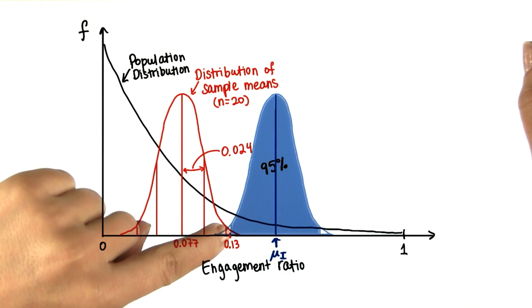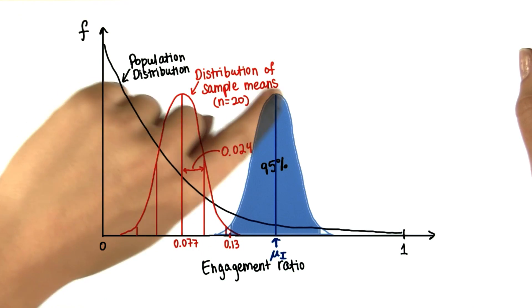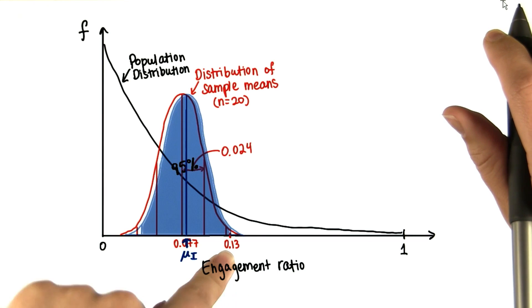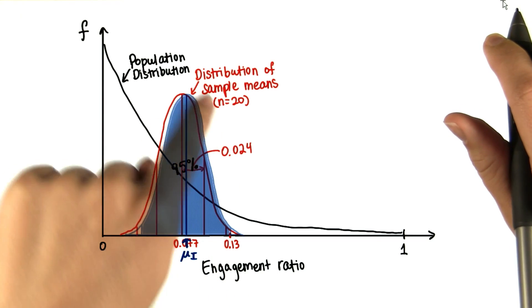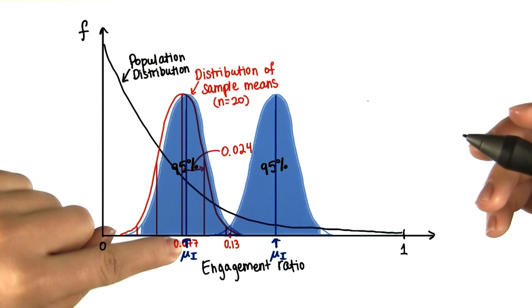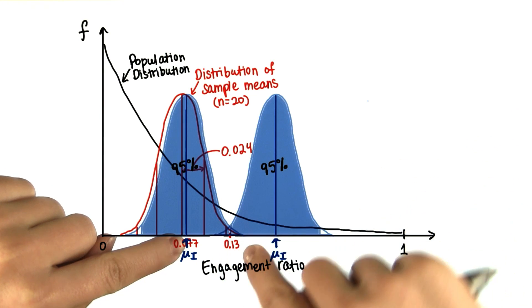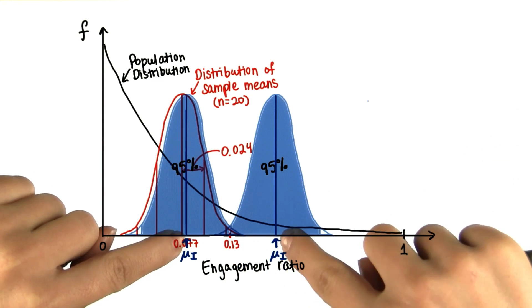See how that sample mean is on the lower bound of that 95%? Whereas here, the sample mean is on the upper bound of that 95%. So if mu sub i can either be here or here, in this interval surrounding 0.13, then this is our confidence interval.